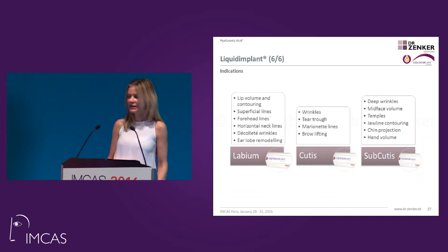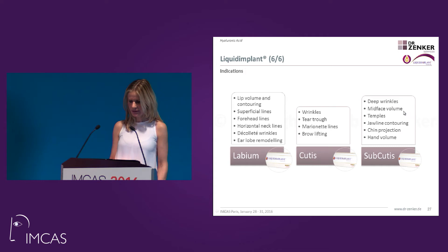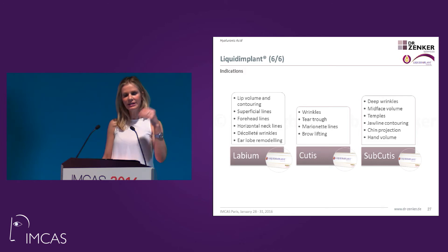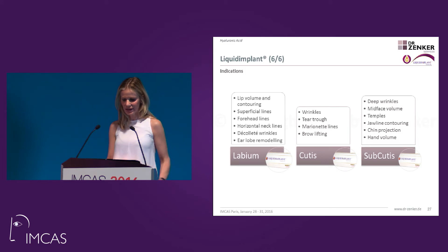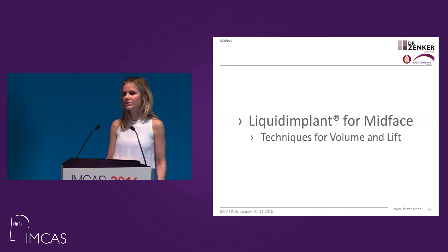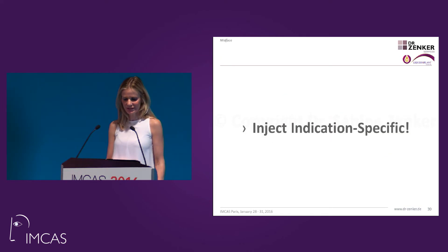What are the indications we can go for with Liquid Implant? It's basically from surface to shape. You have three products for all typical indications: the very fine lines and sensitive areas such as the tear trough and lip for the fine product; the subcutis for more pronounced lines and folds; and the shaper and volumizer sub-product for mid-face, hands, etc. I will show you how to use Liquid Implant for mid-face today.